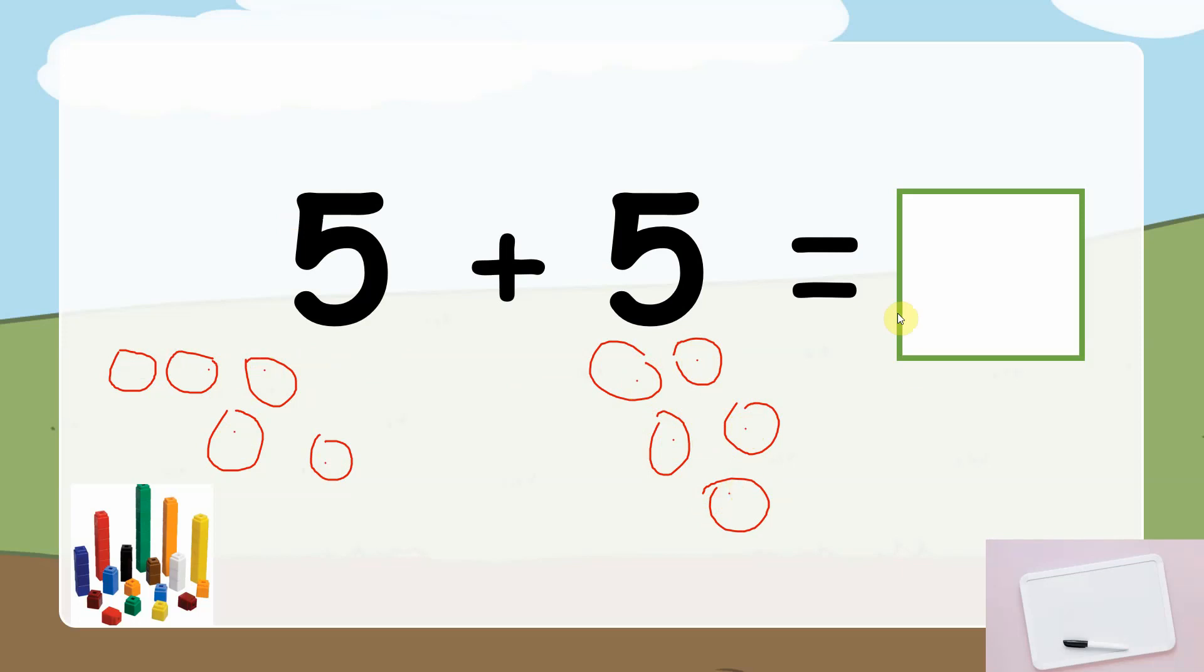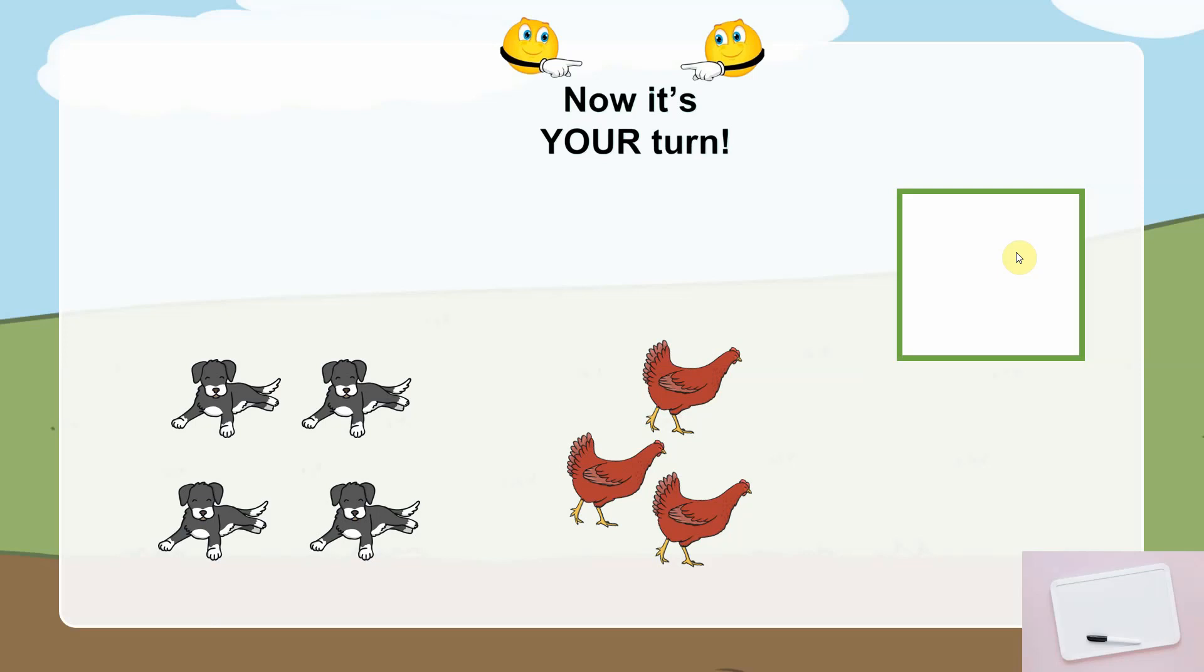Our answer is 10. Good job. Now your turn. Can you try and do this? Remember, I want you to add it, okay? We have four dogs here and three hands. Write the addition sentence and solve it. Remember, addition means all together. You can use your whiteboard or you can write on your notebook.